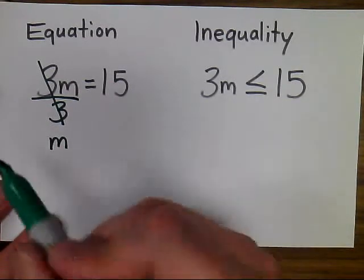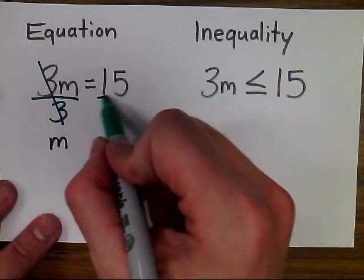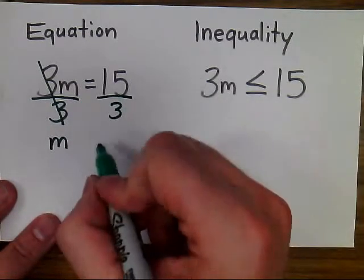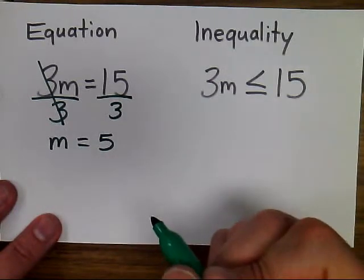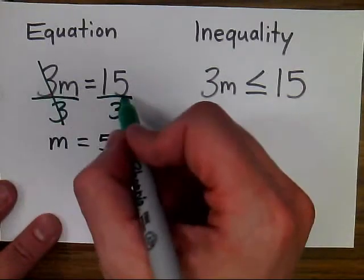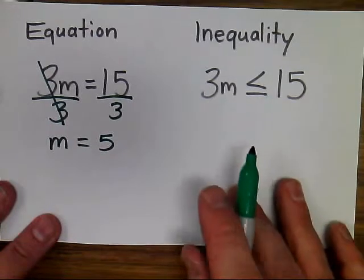Because of the property of equality, whatever we do on one side of the equation we're also going to do the other. So 15 divided by 3 equals 5, and that tells us that m does indeed equal 5. If I plug that in, 3 times 5 does equal 15, and we know that equation is true.